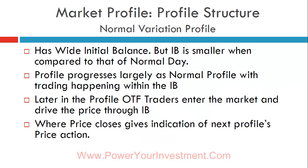The next profile is the normal variation profile, which is similar to the normal profile. The key difference is that the initial balance on a normal variation day is smaller than on a normal day. As the profile progresses, most trading happens within the initial balance. But during the later stage — particularly for Indian market participants when European markets open — OTF traders enter and drive price beyond the initial balance. Where the price closes on a normal variation day gives insight into what may happen the next day.